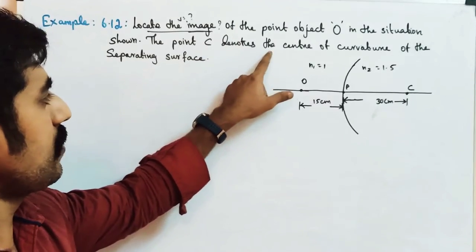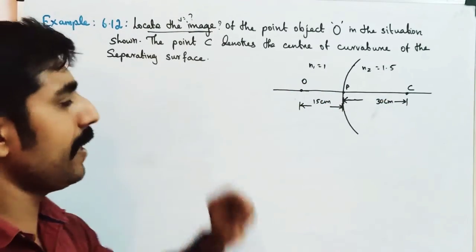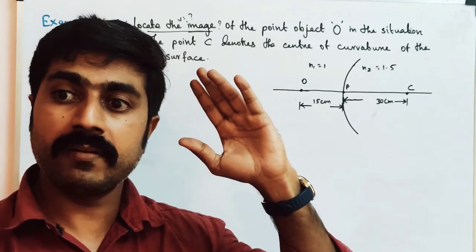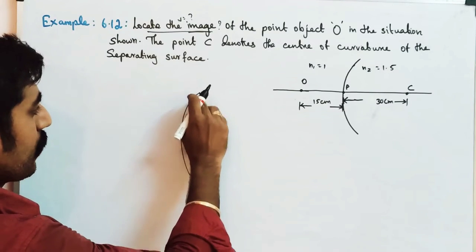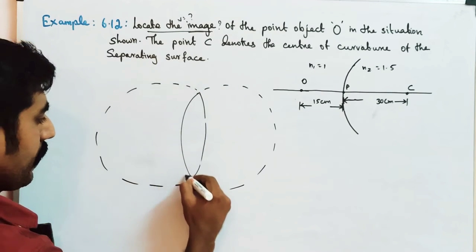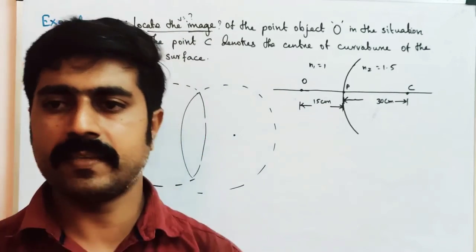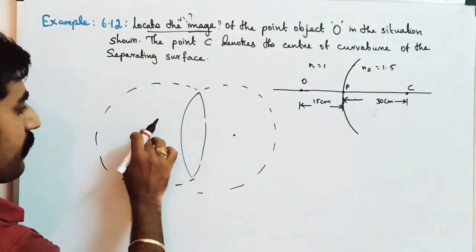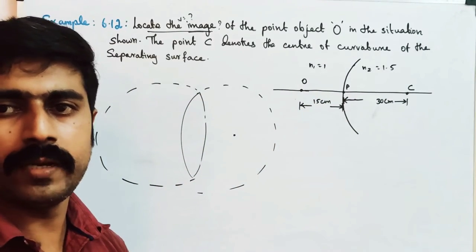The point C denotes the center of curvature of the separating surface. There is a lens, which is a refracting surface, as opposed to a mirror which is a reflecting surface. The lens has two spherical surfaces, and the center of curvature is at the end. These two surfaces form the refracting surface, specifically a single spherical surface.